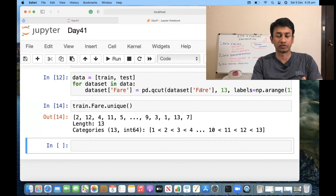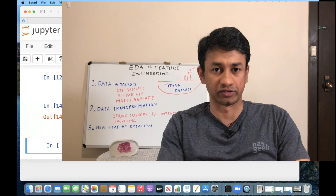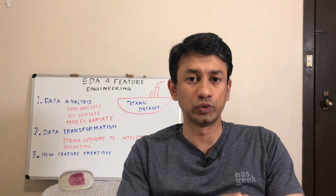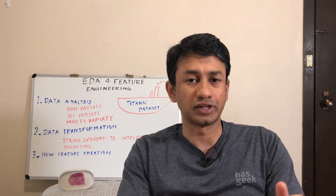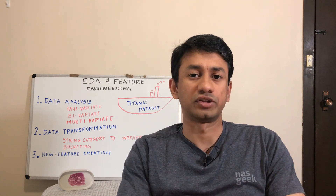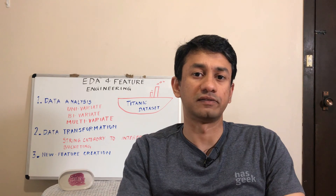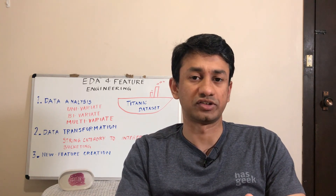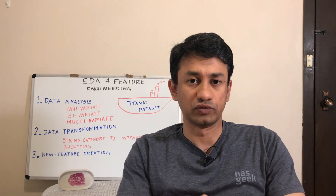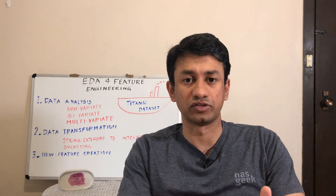So what we have covered for the Titanic dataset includes the different analyses, data transformation methods, and various ways of creating new features. All of these are specific to this dataset. Going forward, we will pick up two different scenarios over the next few days and apply data exploration and feature engineering across different datasets. I would suggest after watching these videos, try to execute the code, understand every line, and pick up a new dataset to come up with your own exploration and feature engineering scripts.